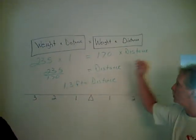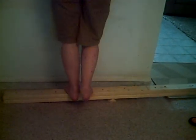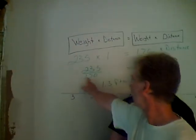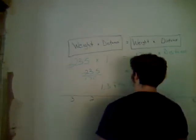So Jeffrey, you want to stand at one foot away from the center. And after having done the math, 235 divided by 170 gives us 1.3 feet, which is about one and a third foot.